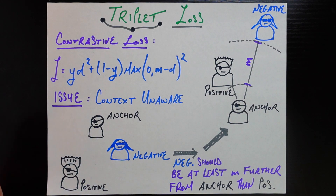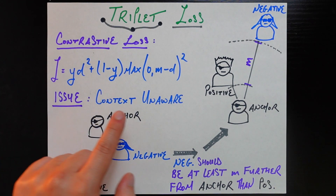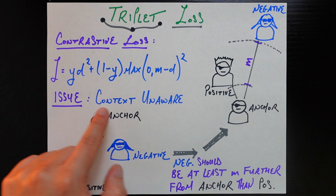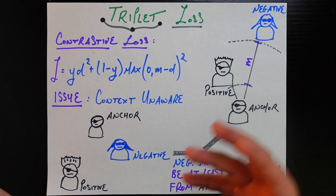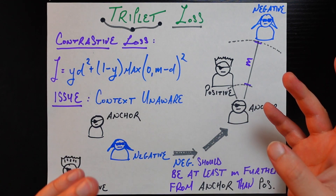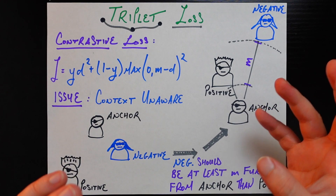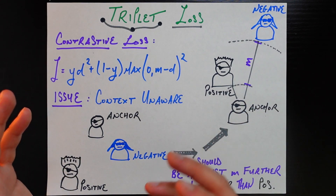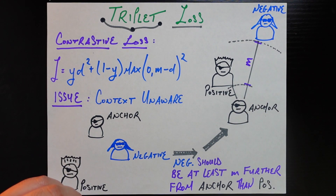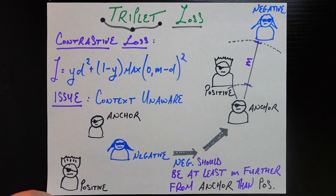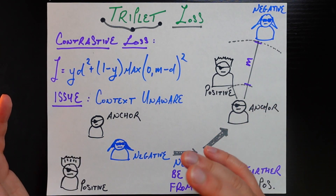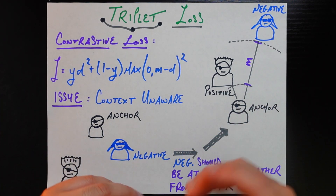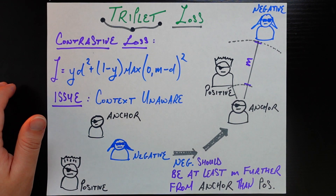The main issue is that contrastive loss is context unaware. We saw that by looking at hard negatives and hard positives, in both cases examining a trio of examples. We didn't give those examples names at the end of the last video, but now we're ready to give them names using the same terminology you'll see in any explanation of triplet loss.